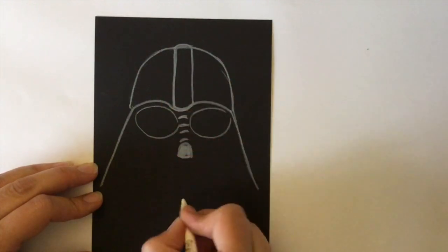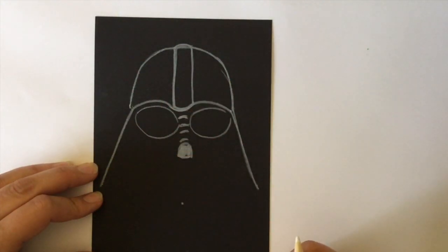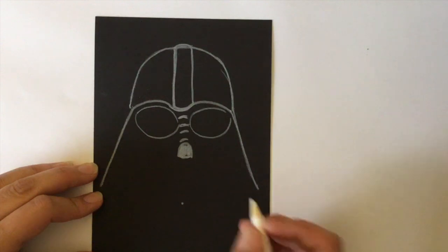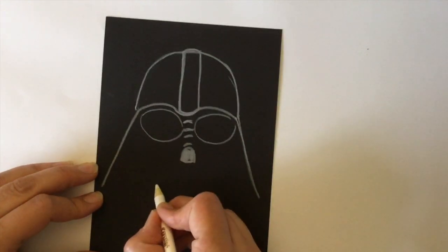His nose creates a triangle with that respirator-like mouth. I draw two circles, basically lined up with the center of his goggles.